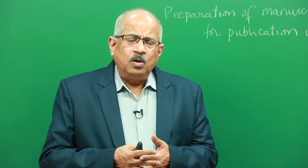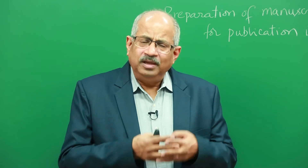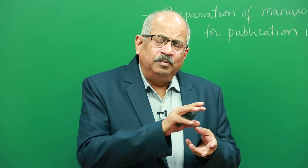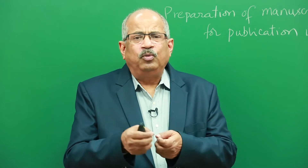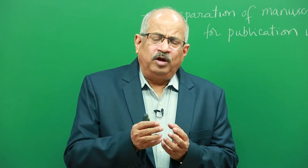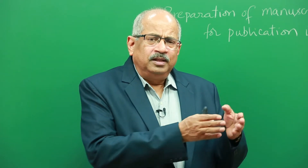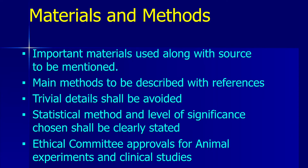For methods, all the most important and main methods should be described briefly. If the methods have already been described by another author, you would state that the method was used as reported by so-and-so. But if you have used a modification, your statement would be that the method reported by so-and-so was used with a minor modification, and you then describe exactly what the modification was. It is essential to write this in materials and methods.